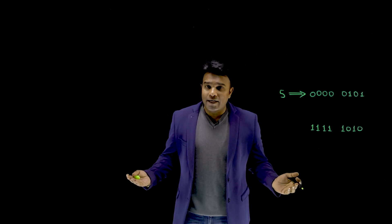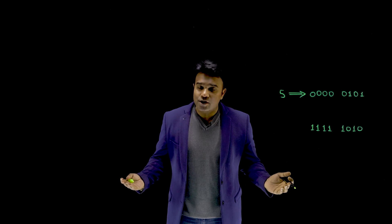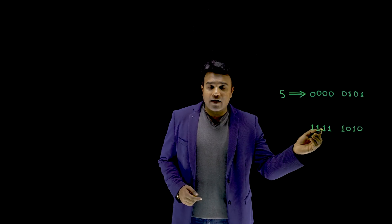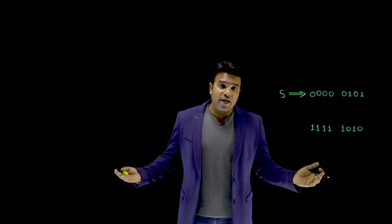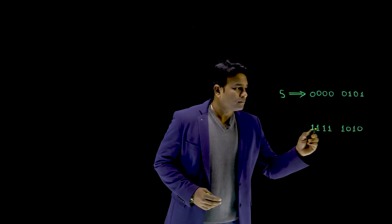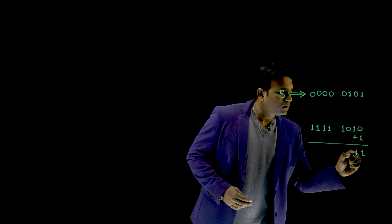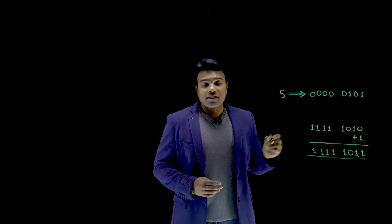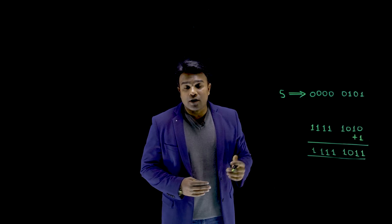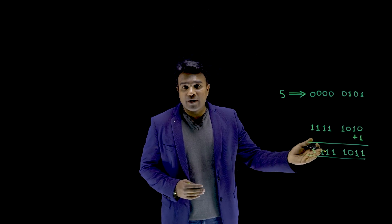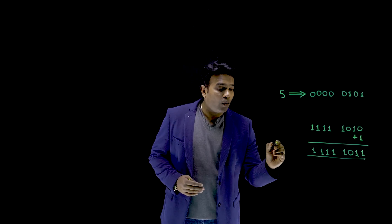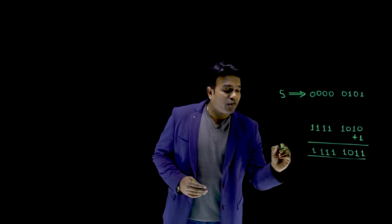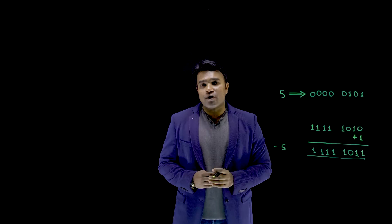It is 2's complement that gives us minus 5. So how do I get 2's complement? Very simple. Add 1 to the 1's complement and we get the 2's complement. This is the 2's complement representation. In fact, this is how minus 5 is stored in the memory.